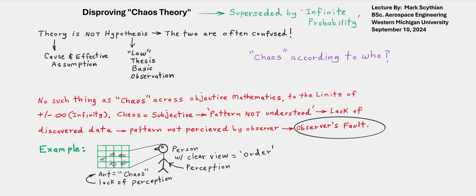It boils down to chaos does not probabilistically exist because it's all limited to pattern not understood. That falls under the observer's fault, and just because something is not understood doesn't mean it's chaos. Chaos theory is superseded by infinite probability. The last part is chaos according to who.